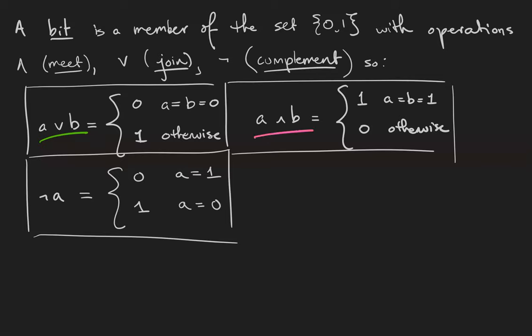Meet is defined to be 1 if both the bits involved are 1 and is 0 otherwise. And the complement of a bit is just the opposite of whatever that bit is. So if a is 1, a complement is 0, and vice versa.